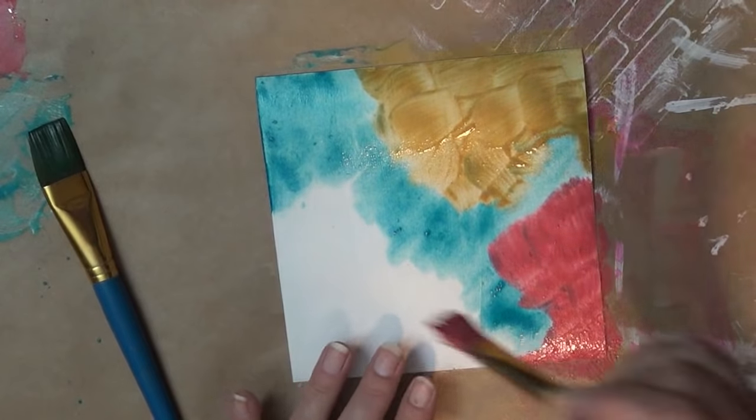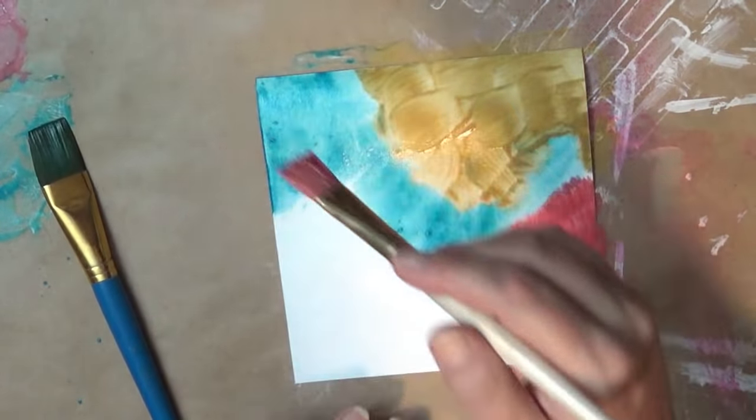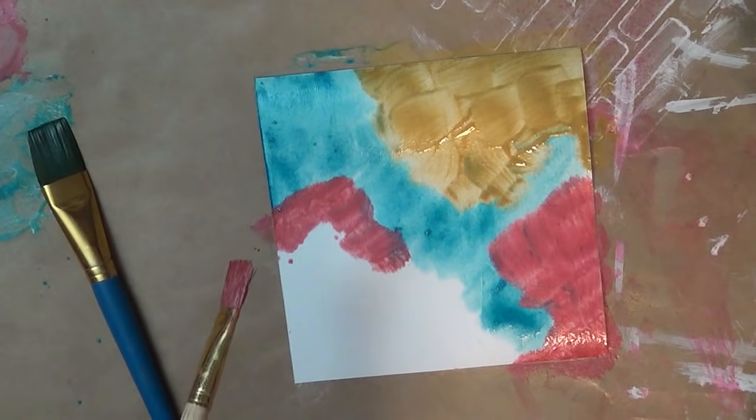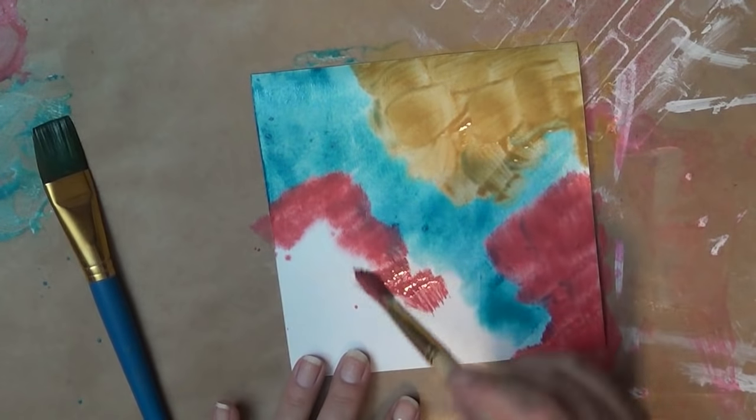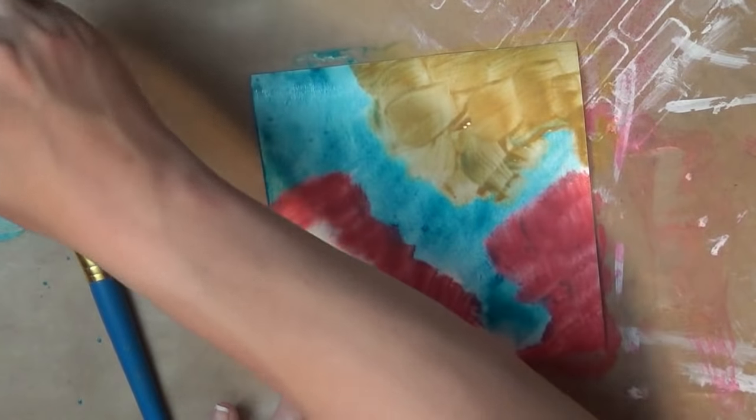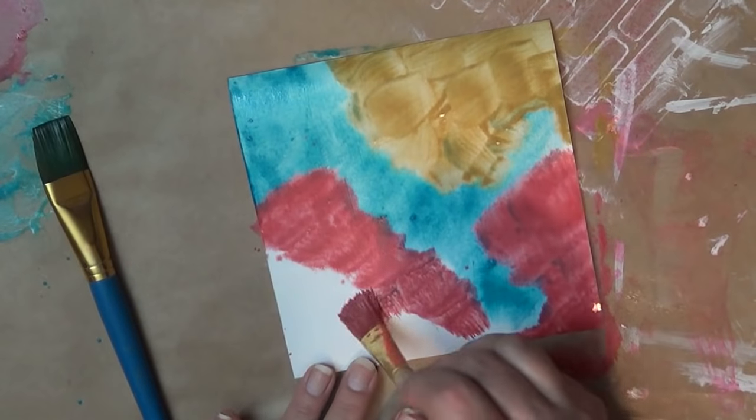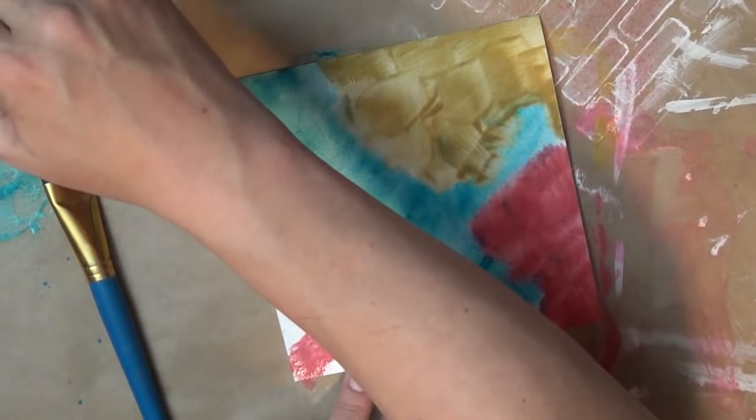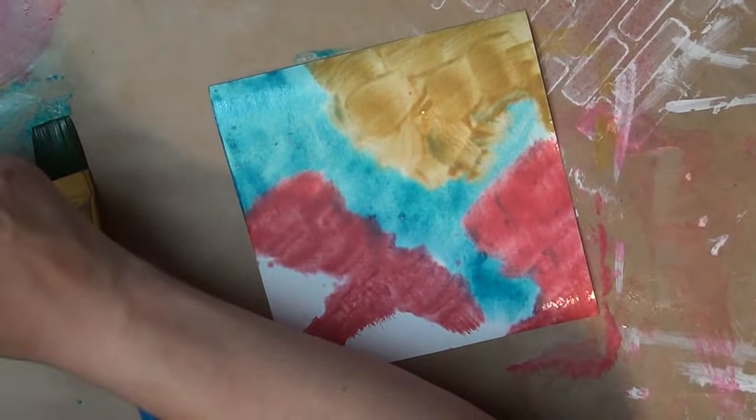Now, one thing that Kat said was to make sure that it doesn't dry, so I've got my water here, and I'm just going to keep spraying it, because I'm kind of slow and I'm a little nervous about that. I just don't want it to dry, because I really want this technique to work out for me.